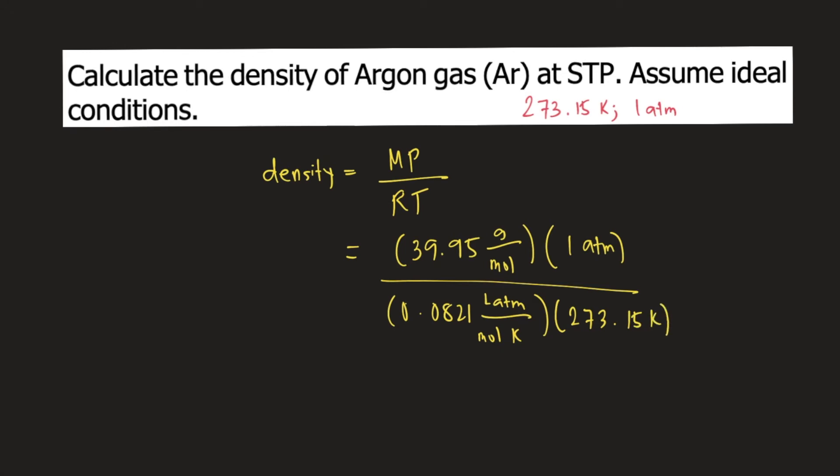So let's check how the units will cancel. Atm will cancel, Kelvin will cancel, mole will cancel. So the unit for density is grams per liter.